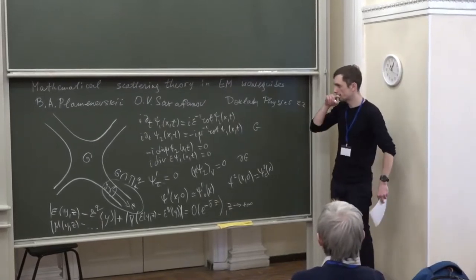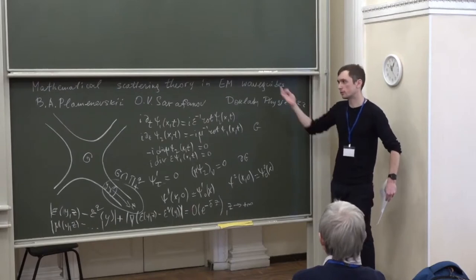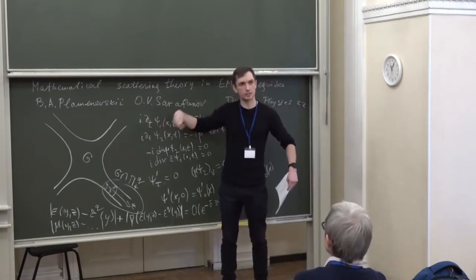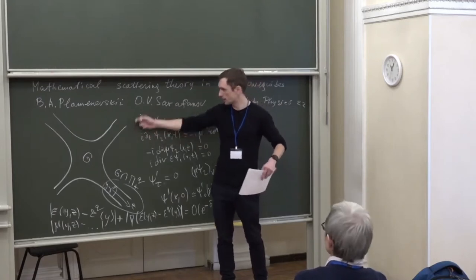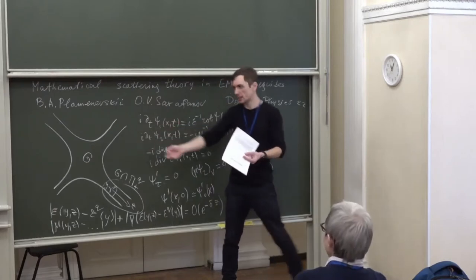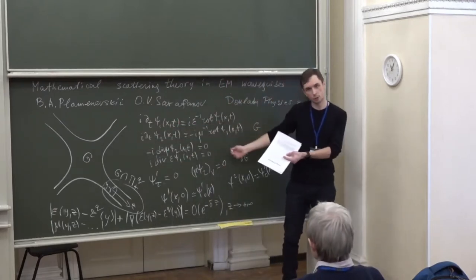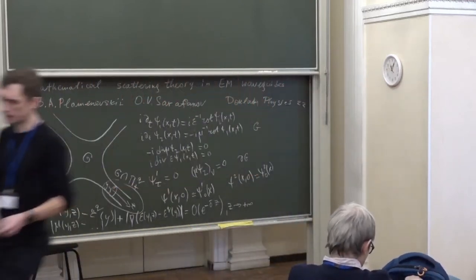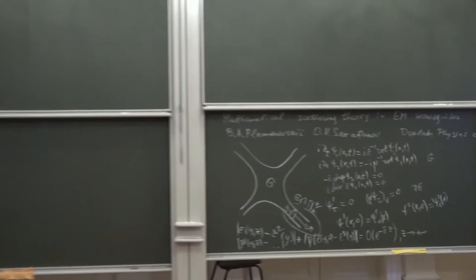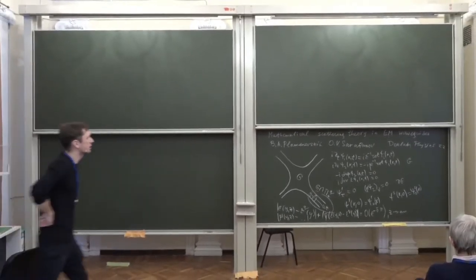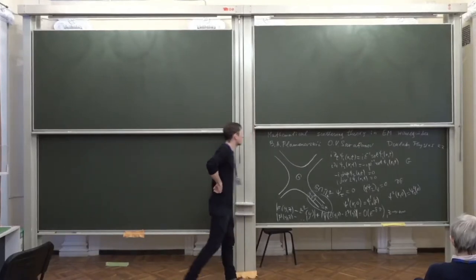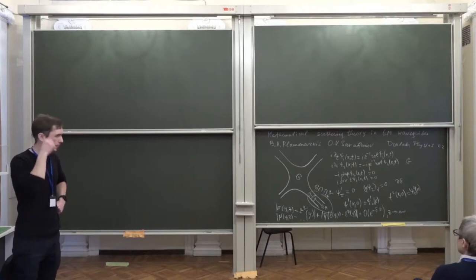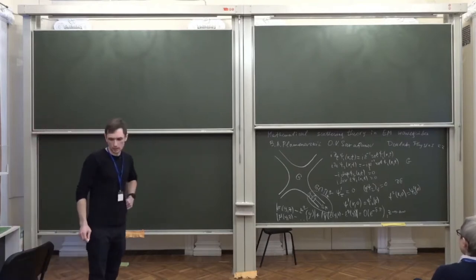A large part of this talk will be devoted to the stationary situation when d/dt is replaced by a spectral parameter k, giving an elliptic self-adjoint operator. That's the statement of our problem. I've explained what 'waveguide' and 'electromagnetic' mean; now I have to explain what kind of scattering theory I am to discuss.